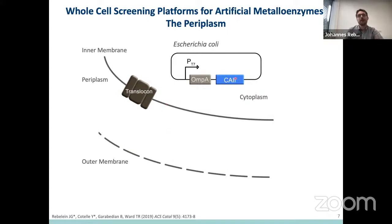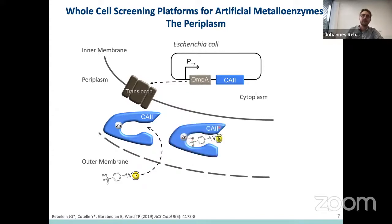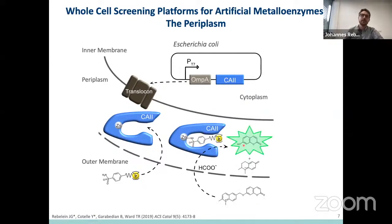In order to achieve this, I linked my gene of interest, carbonic anhydrase, to a signal peptide, OMP-A. After induction and expression, the protein is then transferred to the periplasm. At this point, we can add our metal cofactor to the cells, which is able to cross the outer membrane but not the inner membrane. In the periplasm, it then binds to the zinc at the active site to form our artificial metalloenzyme. We can then add our substrate, which is reduced through artificial transfer hydrogenation, releasing fluorescent umbelliferone. We picked a fluorescent product because it's easy to monitor and follow the reaction.